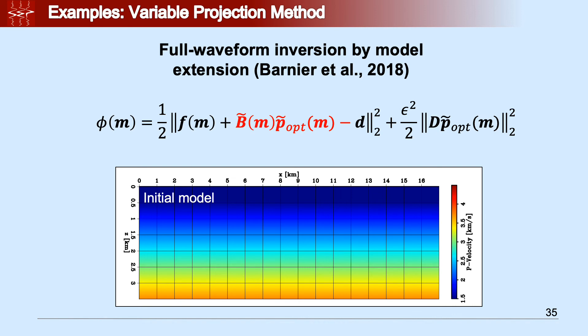B tilde P tilde is data arising from the application of B tilde, which is extended Born modeling operator applied to an optimal perturbation P tilde opt. And P tilde is interesting because this is where the variable projection comes in, which is the solution of an extended least-square RTM problem. So every single time we change the background model or we change M, we have to find the solution of this linear problem.